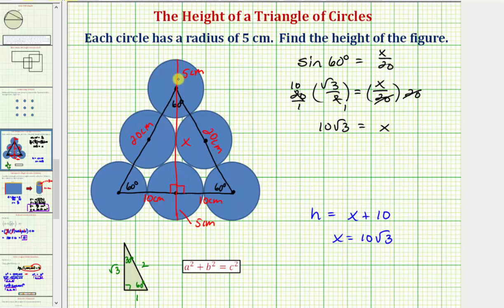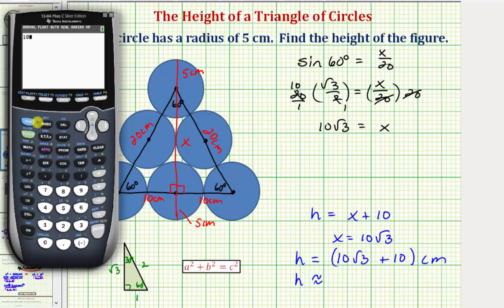Now to determine the height of our figure, we have h equals ten square root of three plus ten centimeters — this is the exact height. For the decimal approximation, using a calculator: ten square root of three plus ten equals approximately twenty-seven point three two centimeters.